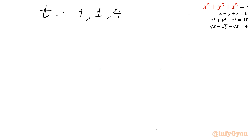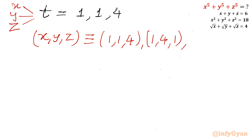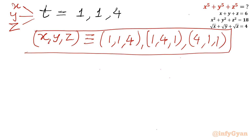The roots of the cubic equation are x, y, and z. So the possible ordered triplets (x, y, z) are: (1, 1, 4), (1, 4, 1), and (4, 1, 1).